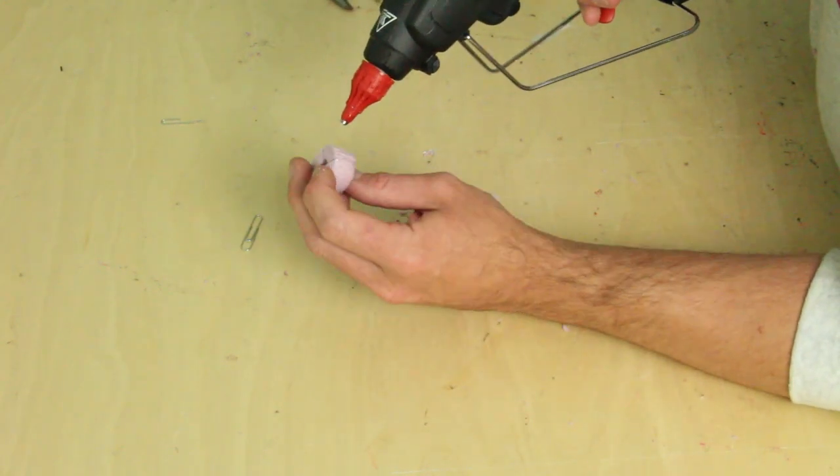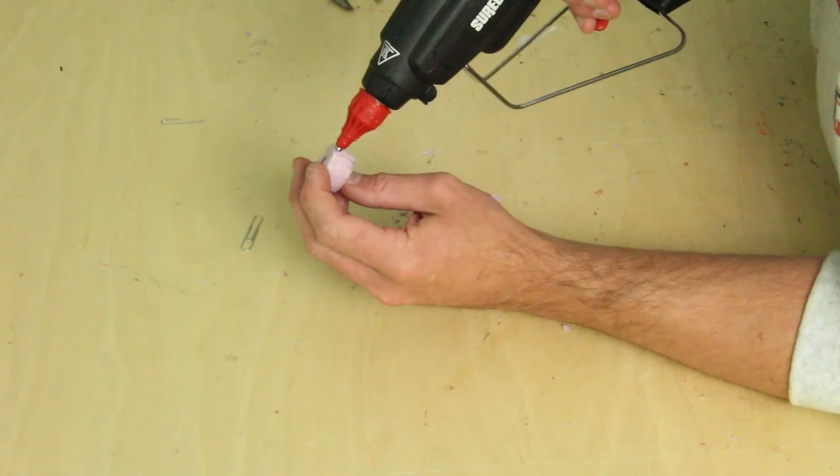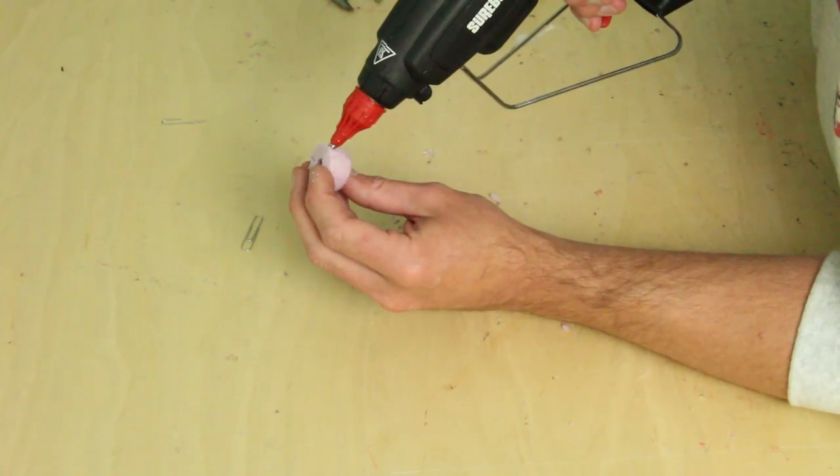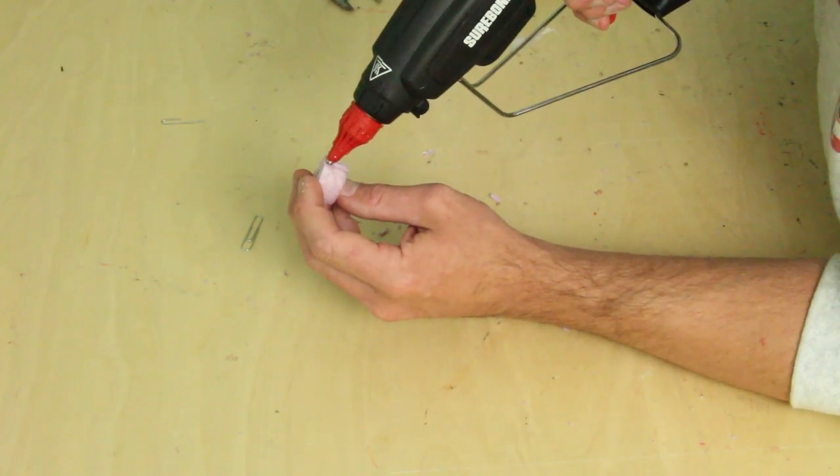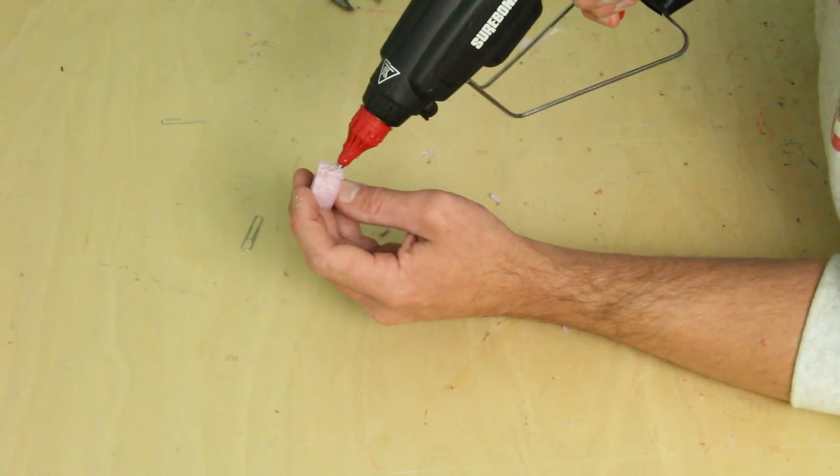While this might seem too good to be true, this is actually how it works. I'm simply adding a small bead of glue to each of the areas where I marked on the styrene piece. I'm going diagonally a little bit here because the elements aren't going to be straight up and down.